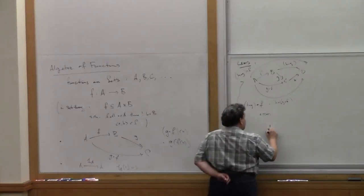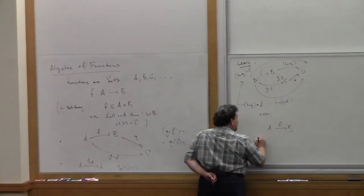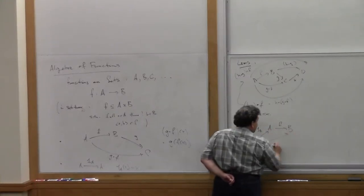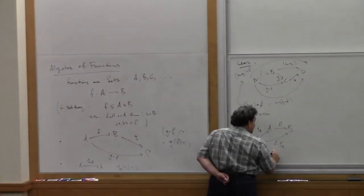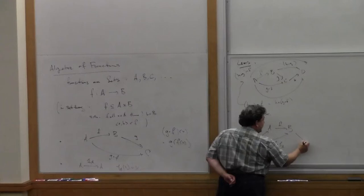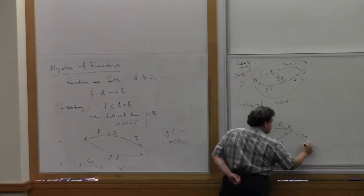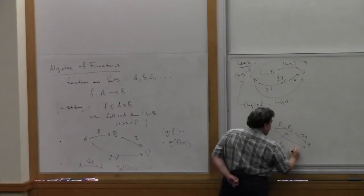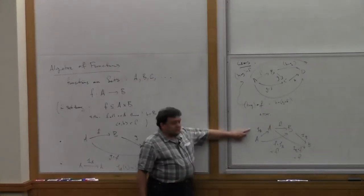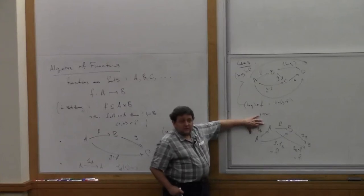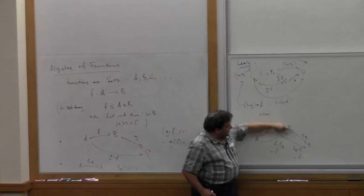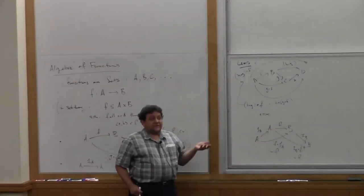The other law: if I take F from A to B and compose with the identity on A, then F after the identity on A equals F. Similarly, if I compose the identity on B with F, then 1_B after F also equals F. Because this function doesn't do anything — I take x to x and then apply F, which is the same as just applying F. Those are the basic laws.